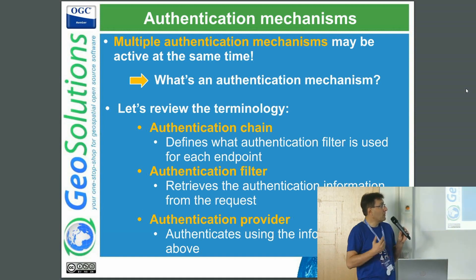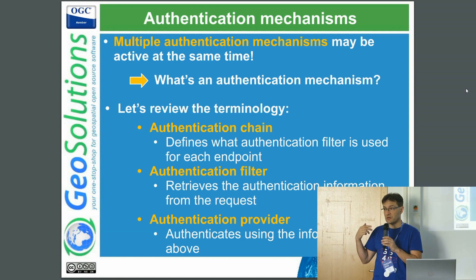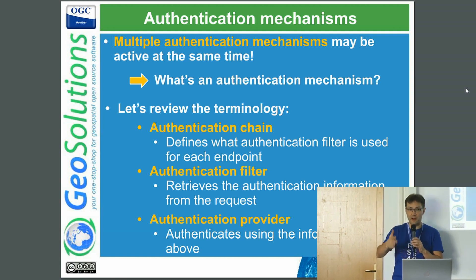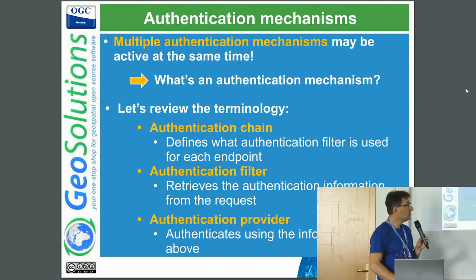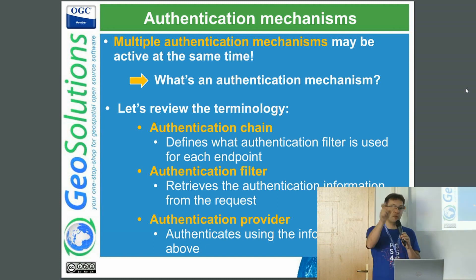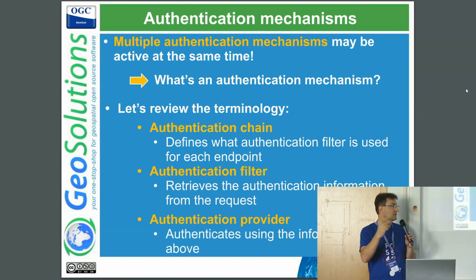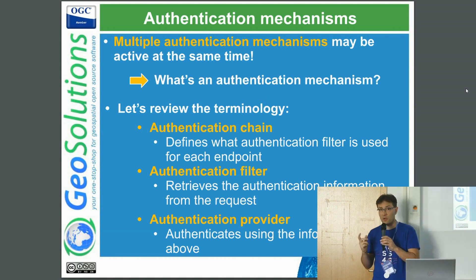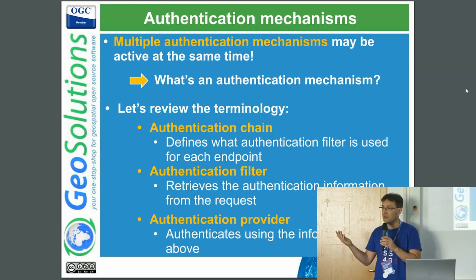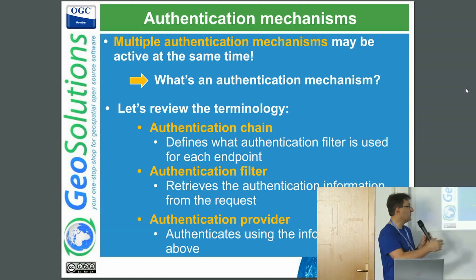It's complicated also because you might want different authentication mechanisms depending on the endpoint you're hitting. For the user interface we typically have a different set of endpoints compared to the OGC services, and for the REST API you might want something else. These are called authentication chains — we attach them to an endpoint and say: this is the series of authentication filters you have to try. For example, try form authentication, then check for a cookie, then HTTP Basic — if nothing works, the user is anonymous.